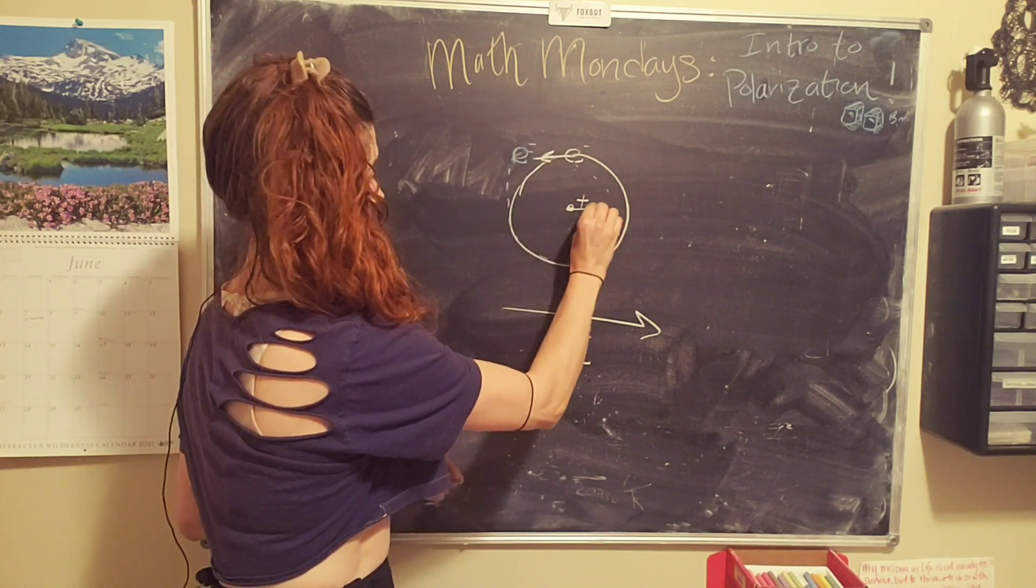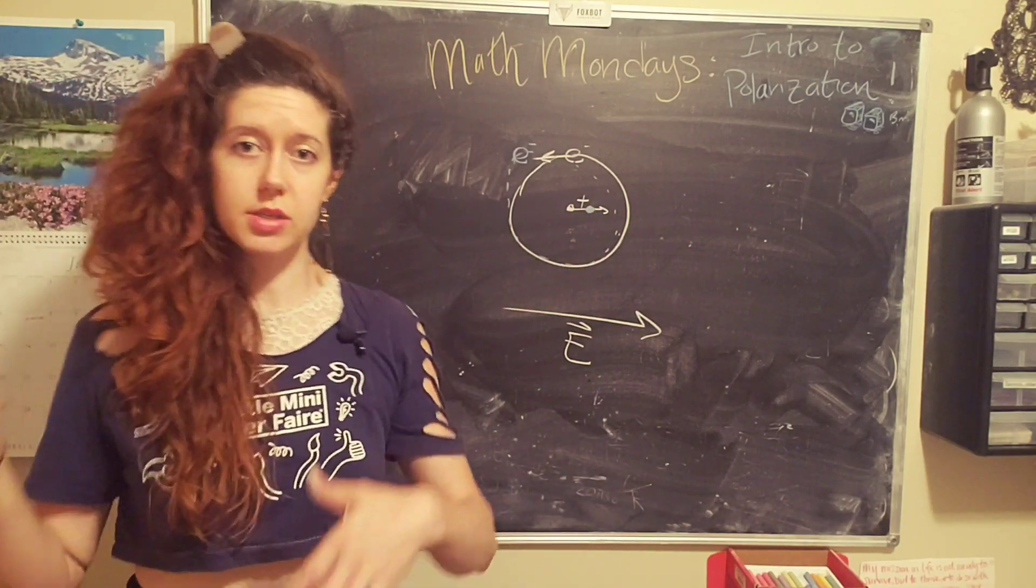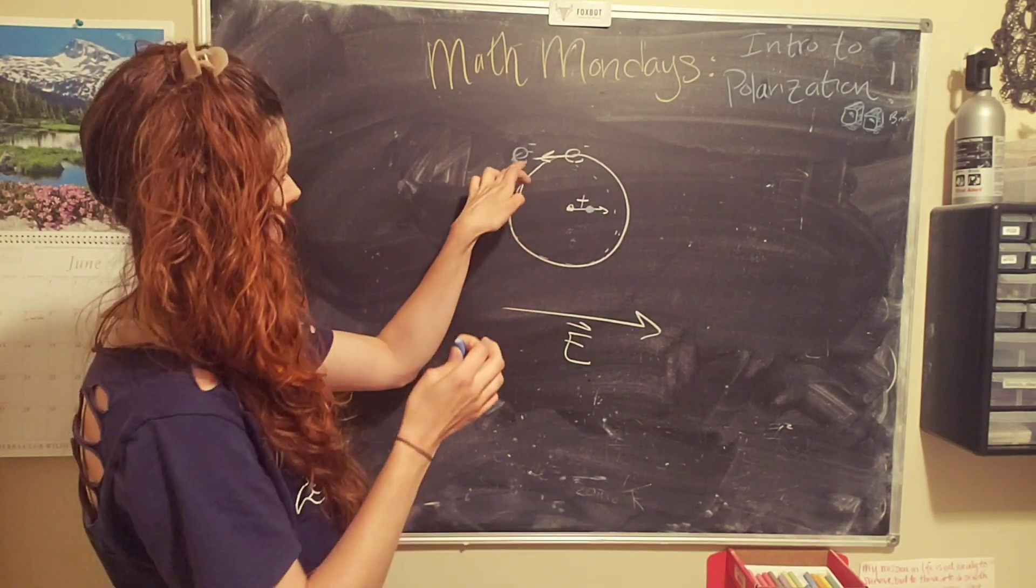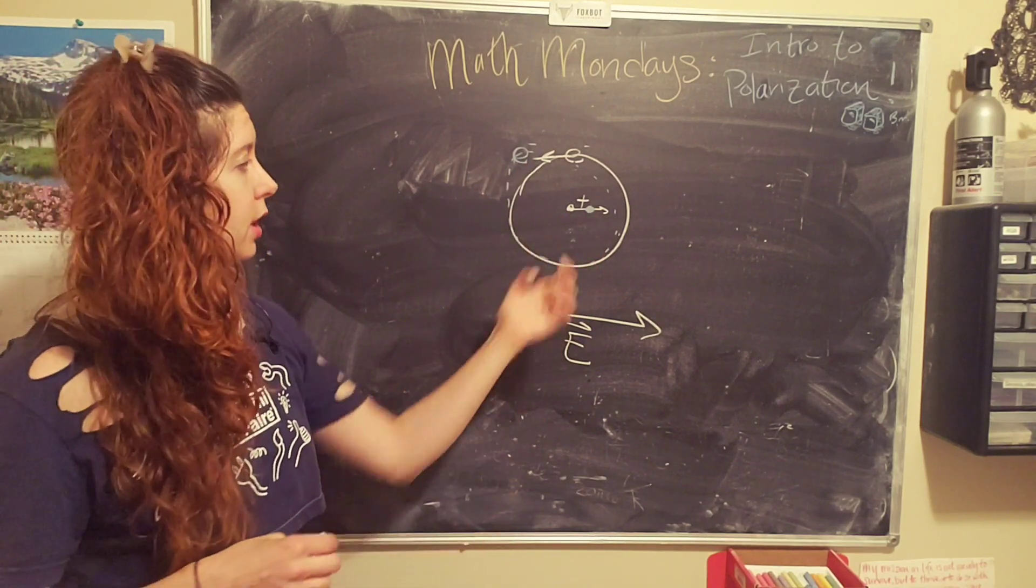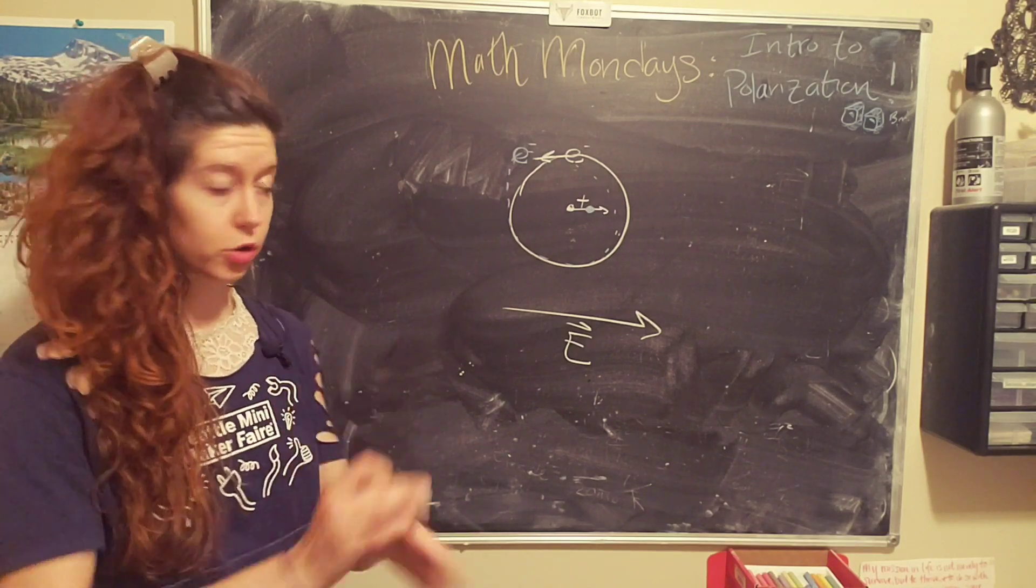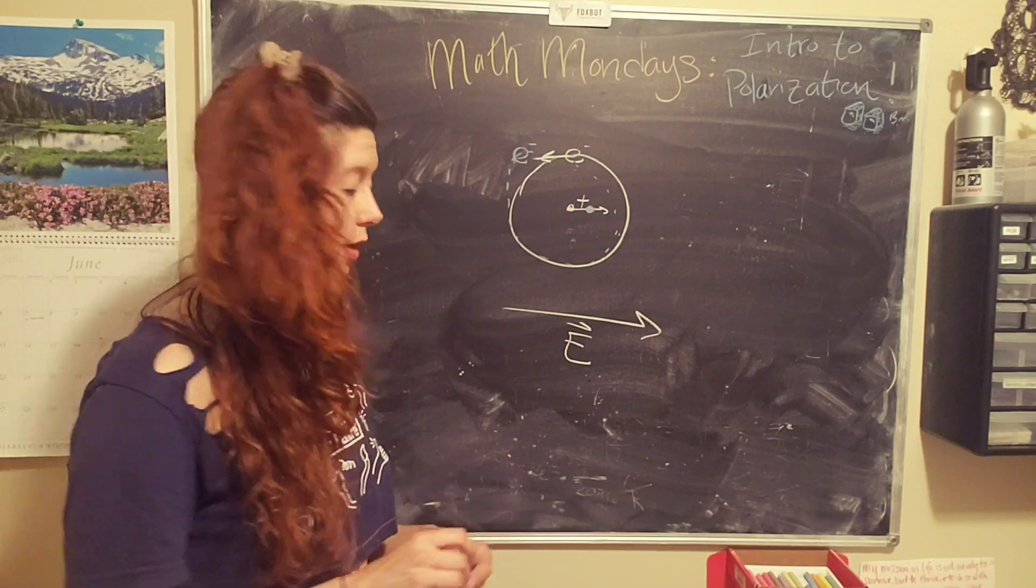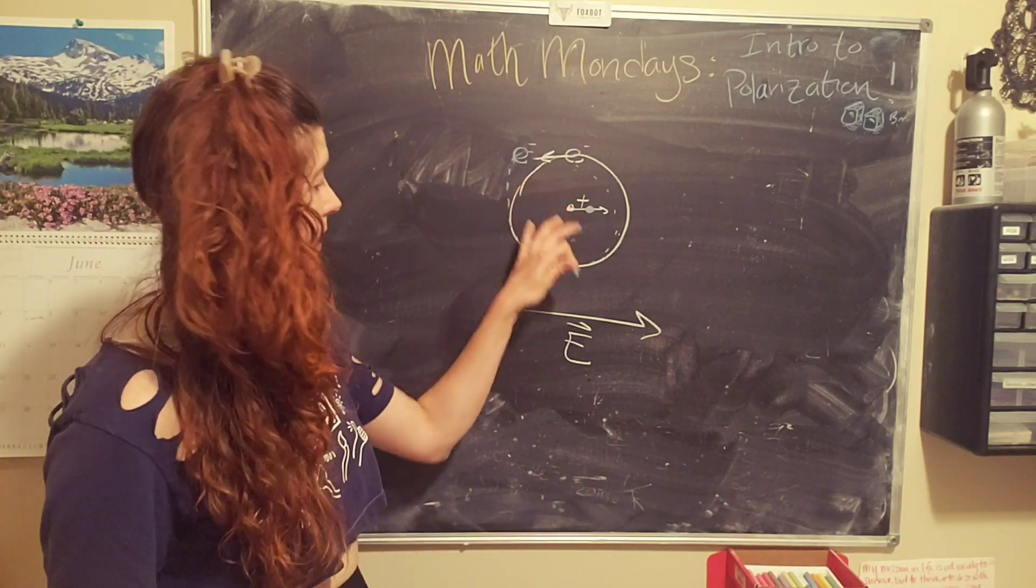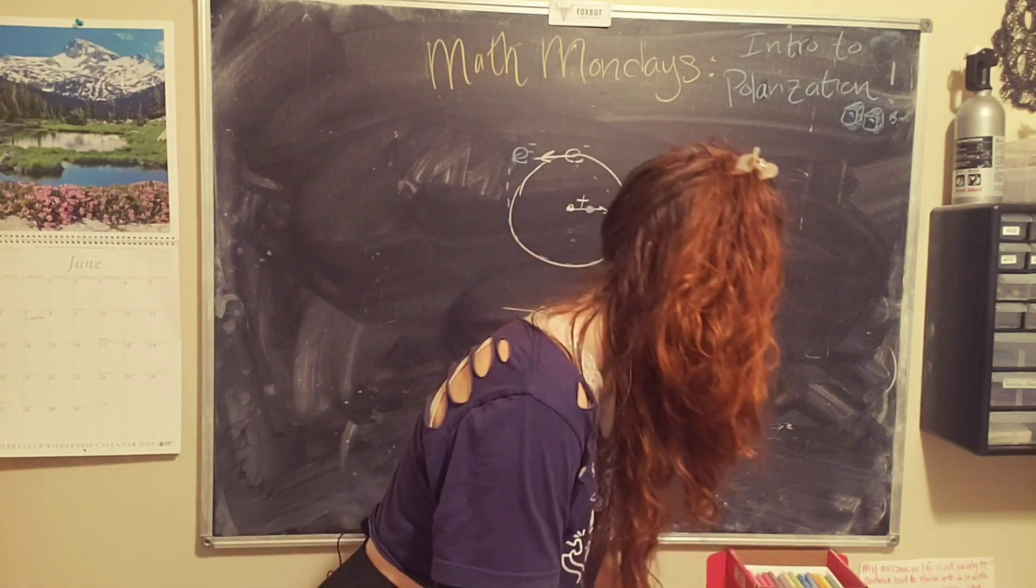And maybe the atom moves, or sorry, the nucleus moves a bit to the right. And then it reaches this equilibrium point because the electron and the positively charged nucleus are attracted to each other. And so there's some energy between that. So they will move until they reach an equilibrium with each other that pretty much cancels out this external electric field.